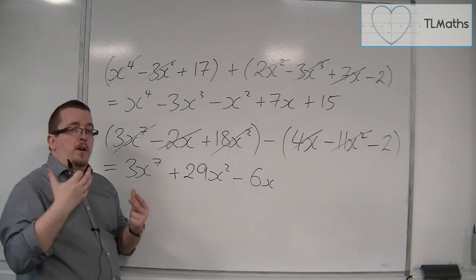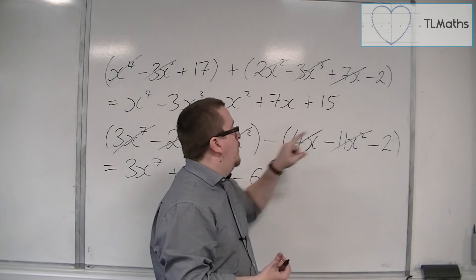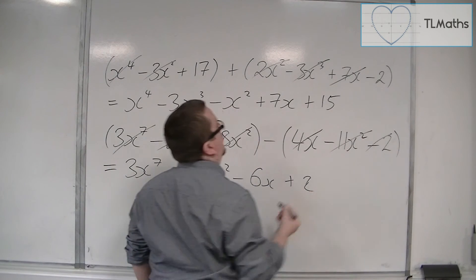And then finally, looking for constant terms. So we've got minus, so take away minus 2. So that's plus 2 on the end. And that deals with the final term.